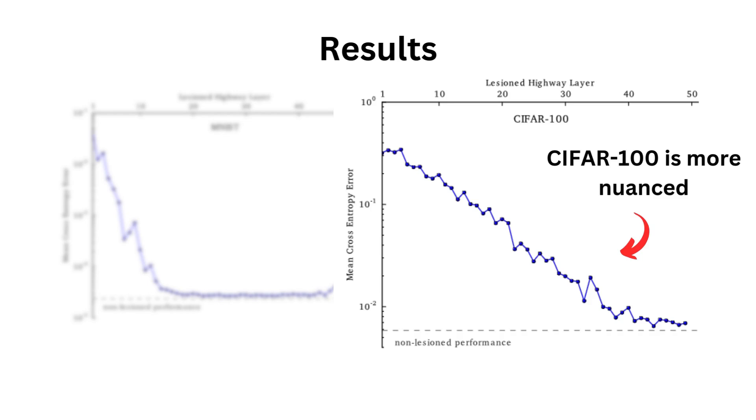For CIFAR 100, the result is much more nuanced, where most of the layers are important, especially the earliest ones. This gives us a view that with this type of architecture, the network can figure out how much representation power you need, just like the residual neural network.